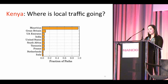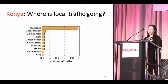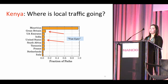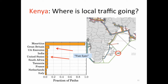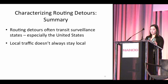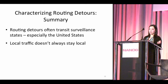For Brazil's local traffic, the United States accounts for about 80% of their tromboning traffic, despite all the measures Brazil is taking to prevent this. For Kenya's local traffic, there's a different distribution — certain surveillance states see small fractions, but Mauritius sees most of the tromboning traffic. This is explained by the cable map: Mauritius is directly connected to Kenya via submarine cables, as are South Africa and the UAE, which also see portions of Kenya's local traffic.